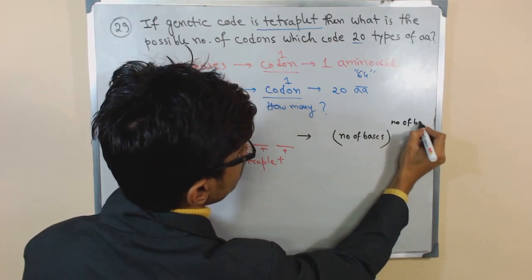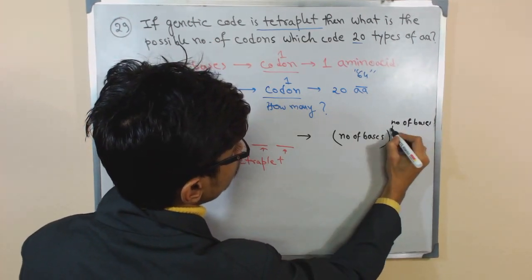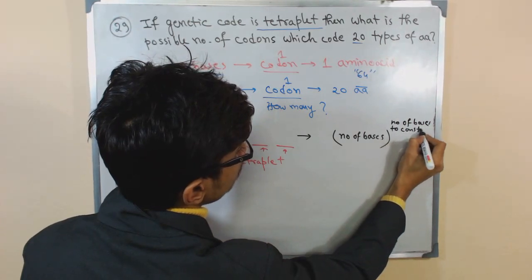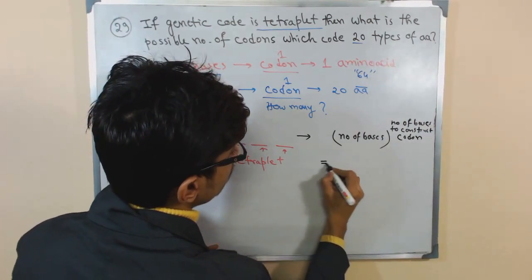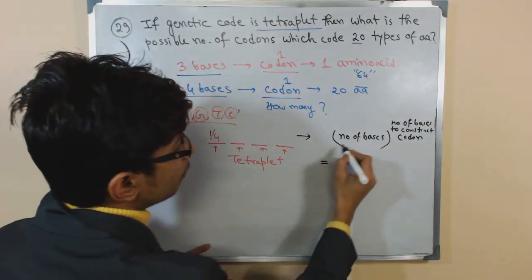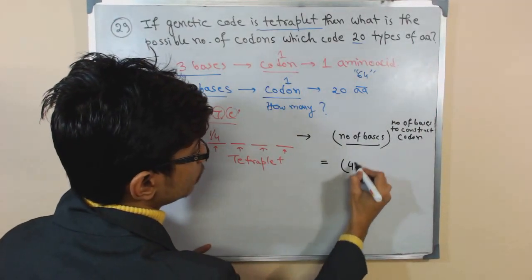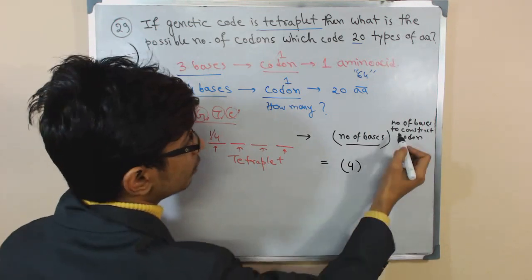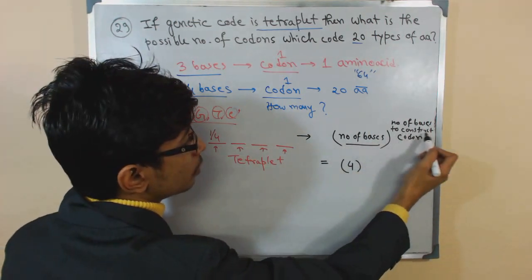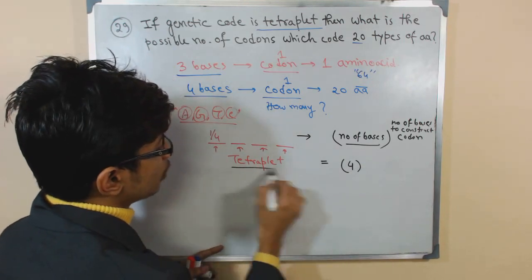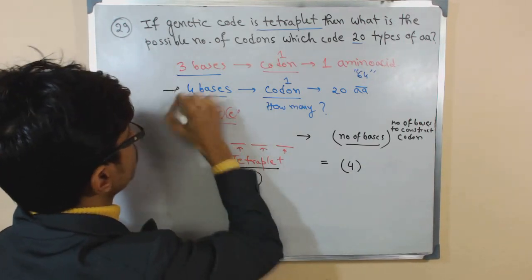Here, the number of bases is four, and we know number of bases means A, G, T, and C—this is four. The number of bases to construct the codon is also tetraplate, means four. So we put four there.